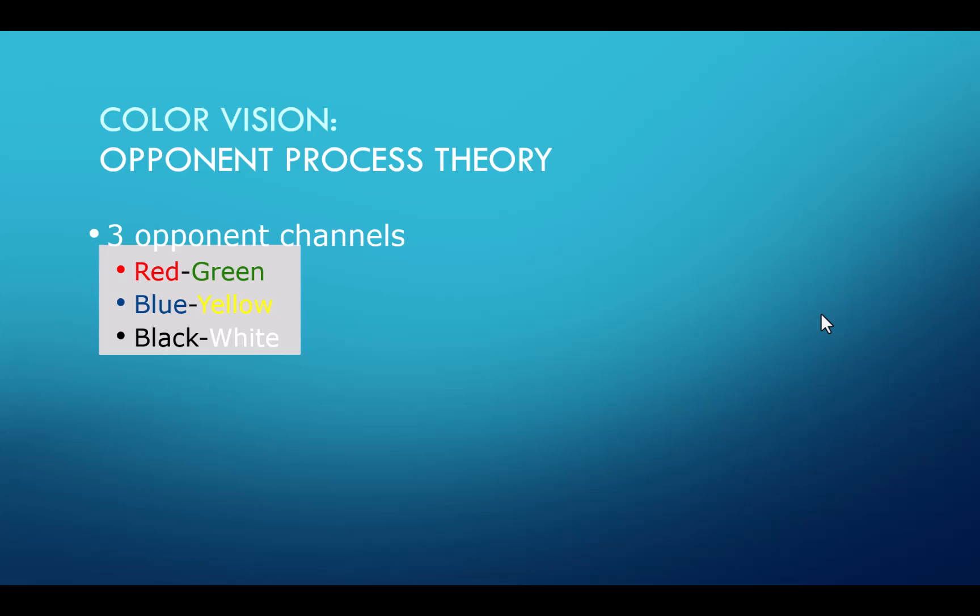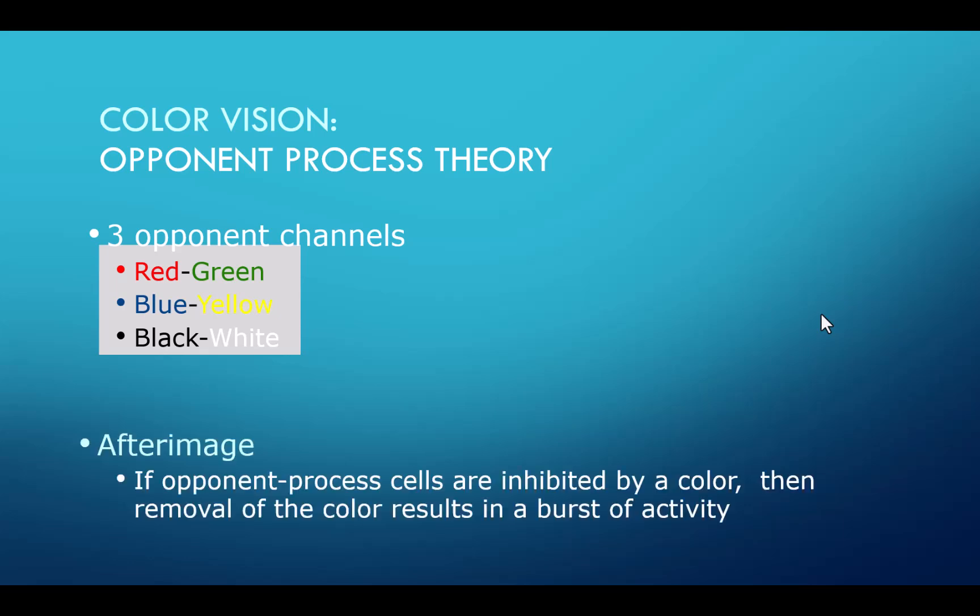And the opposing color is seen. So for example, if light waves of red are hitting our retina, that's going to inhibit those cones. But when those red light waves are removed, then we see a burst of activity in those cells resulting in us seeing the color green. And that's called an after-image. So again, if opponent process cells are inhibited by a color, removal of that color results in a burst of activity. So let's try that.